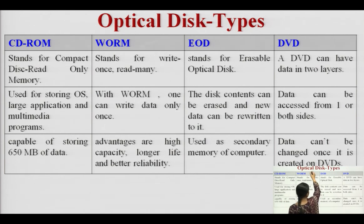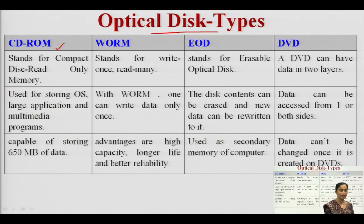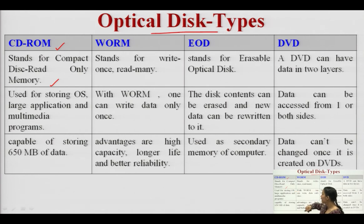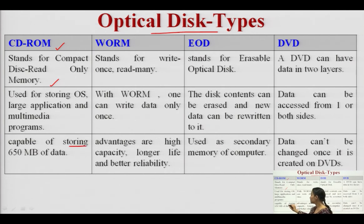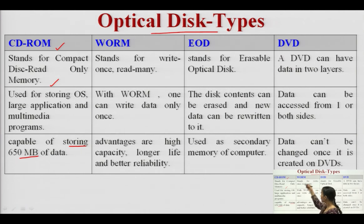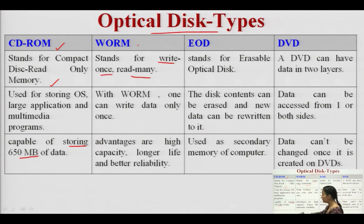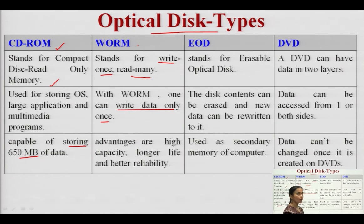There are four kinds of optical disc types. The first is CD-ROM (Compact Disc Read-Only Memory), used for storing operating systems, large applications, or multimedia programs. A single CD can store 650 MB of data. The second type is WOM (Write Once and Read Many) — we can write data only once. The advantages of WOM include high capacity, longer life, and better reliability.